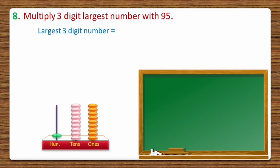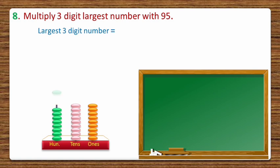Now in the 100s stick we count: 1, 2, 3, 4, 5, 6, 7, 8, and 9. That gives us 9 beads in the 100s stick.